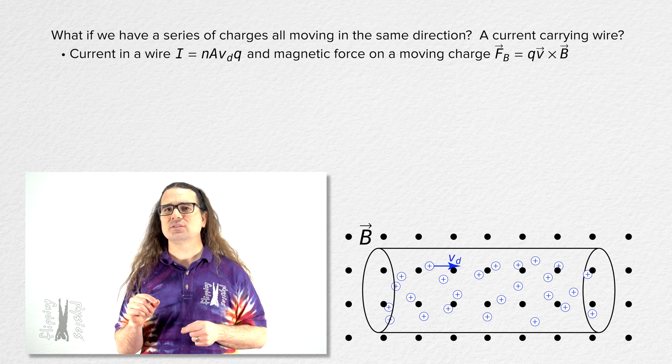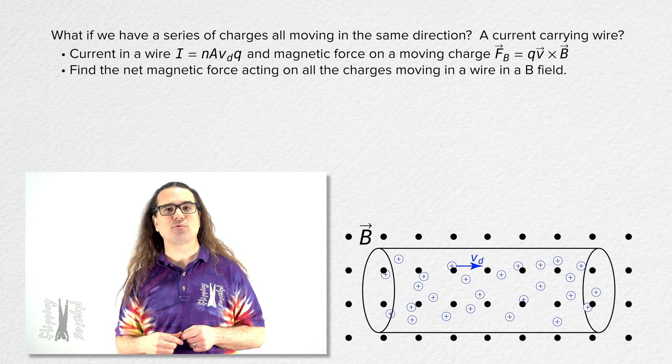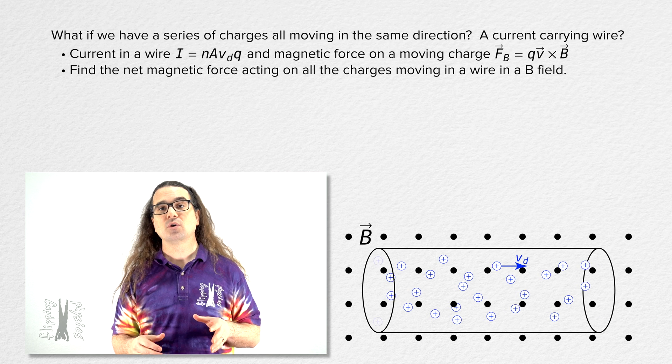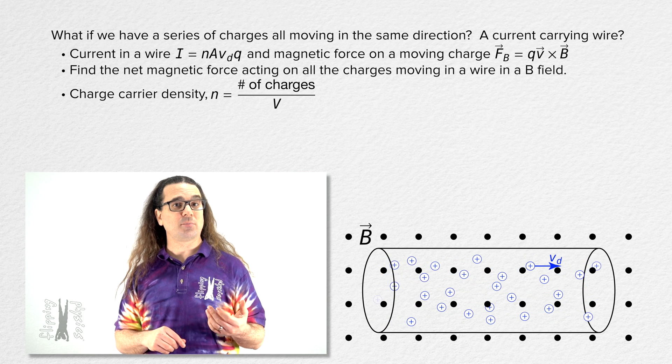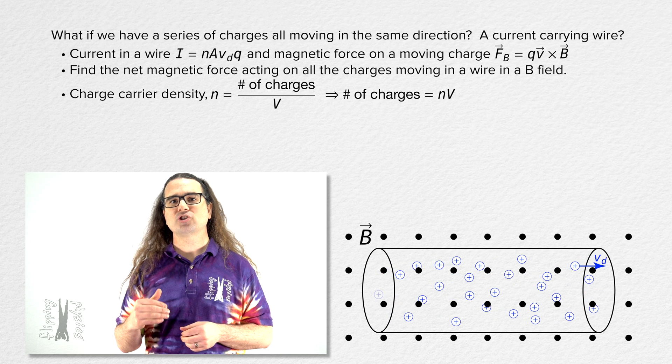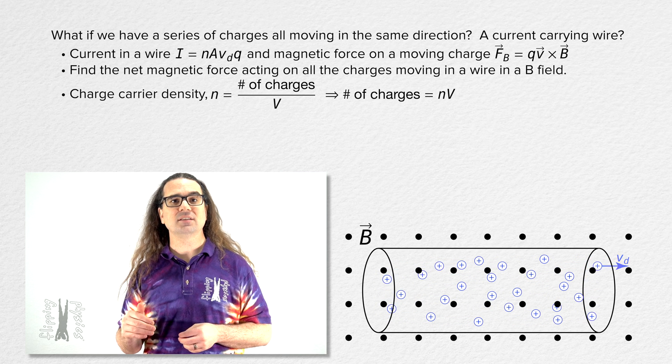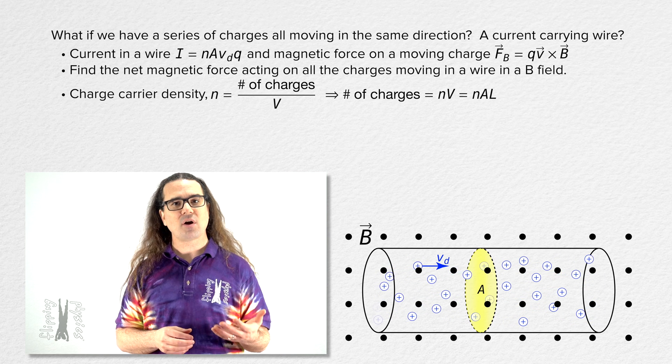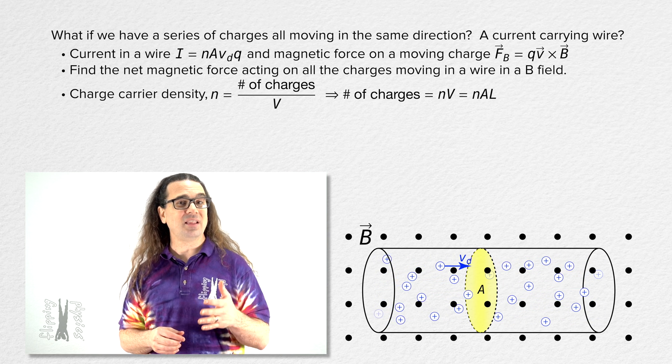However, what we want to know is the net magnetic force acting on all the charges moving in the wire. So, we need to use charge carrier density equals the number of charges over volume. Which means the number of charges equals the charge carrier density times the volume of the wire. The volume of the wire equals the cross-sectional area of the wire times the length of the wire.